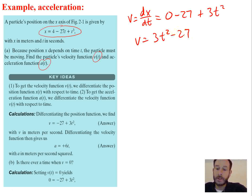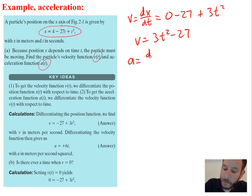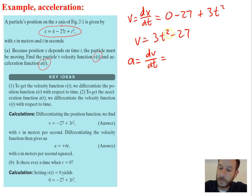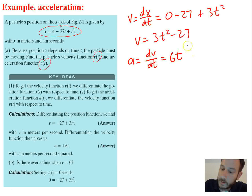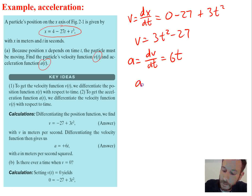To find the acceleration, we take the derivative of the velocity function. The derivative of 3t² is 6t (bring the 2 out front, subtract 1 from the exponent), and the derivative of the constant −27 is 0. So acceleration a = 6t. This matches the result shown: v = −27 + 3t² and a = 6t.